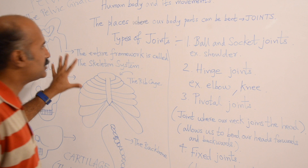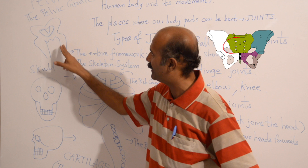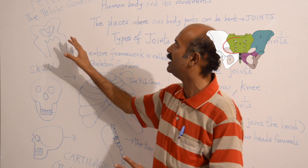The pelvic girdle looks like this — we have the upper body and the thighs, and the pelvis is joined with the thighs. This is the general shape of the pelvis.